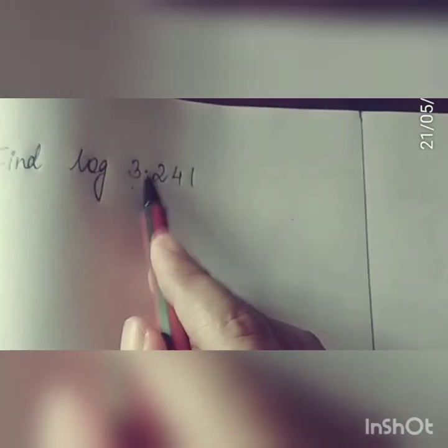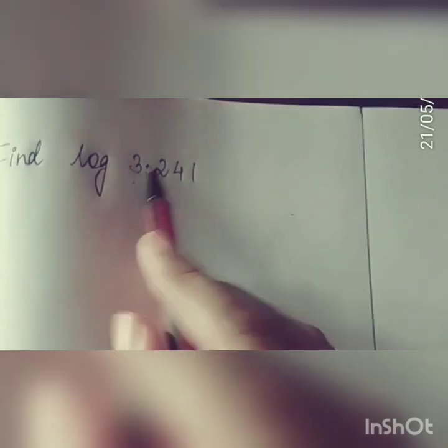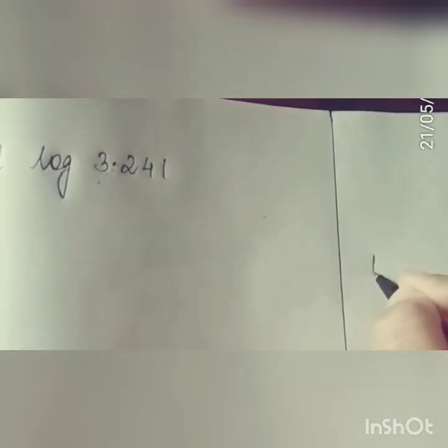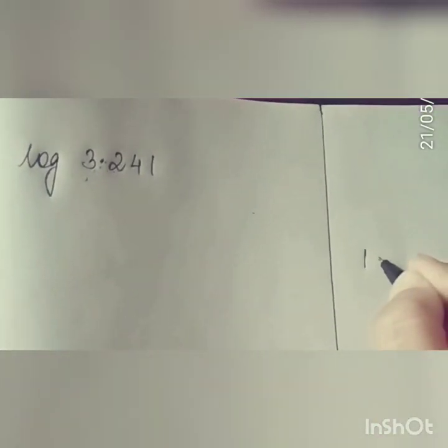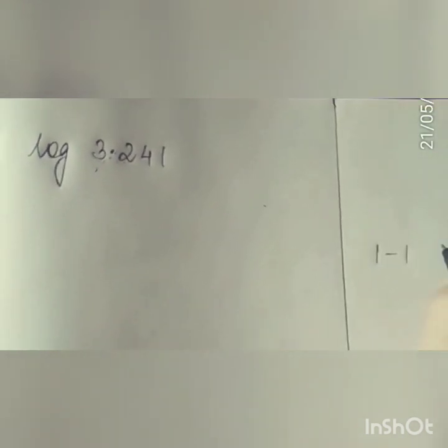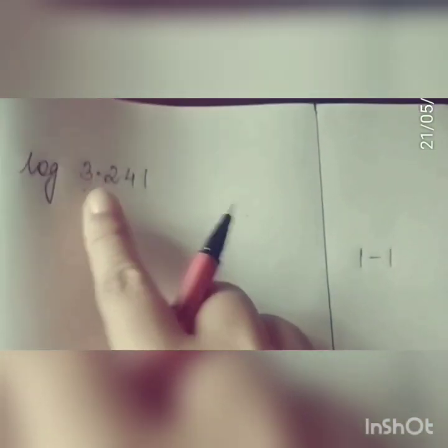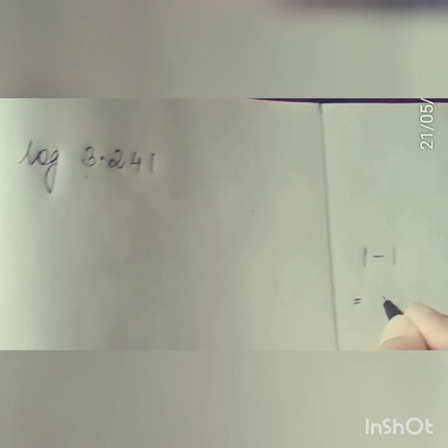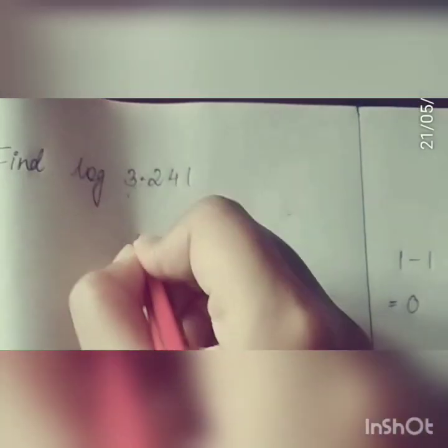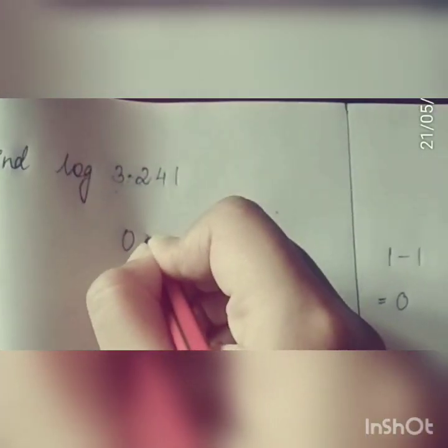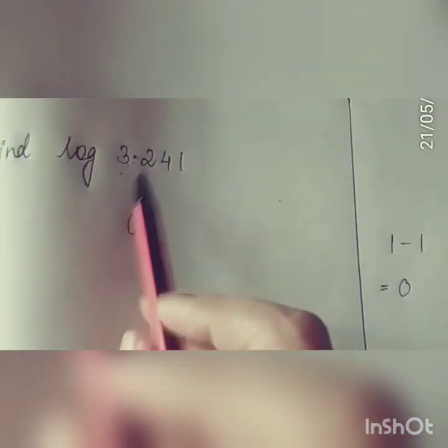First we will have to see after how many digits there is a decimal point. We can clearly see that after one digit there is a decimal point. We will always have to subtract 1 from the digits occurring before the decimal point, so 1 minus 1 is 0. Just write 0 and then give a decimal point.